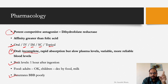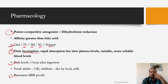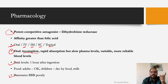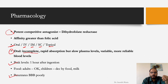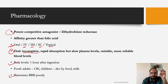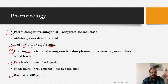Because methotrexate penetrates the blood-brain barrier very poorly, in CNS tumors requiring its cytotoxic effect, intrathecal methotrexate is given — injected into or around the spinal cord, into the submeningeal spaces — to make it available at that site.